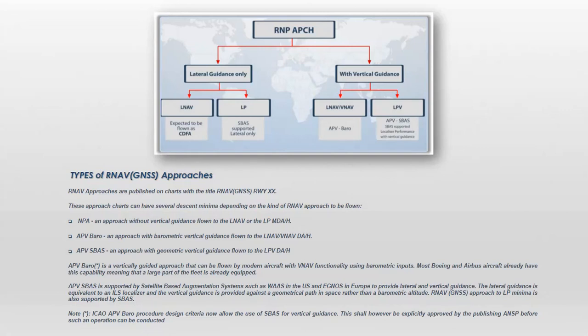R-NAV GNSS approach to localizer performance LP minima is also supported by SBAS. Note that ICAO APV BARO procedure design criteria now allow the use of SBAS for vertical guidance. This shall however be explicitly approved by the publishing authority or Air Navigation Services before such an operation can be conducted.